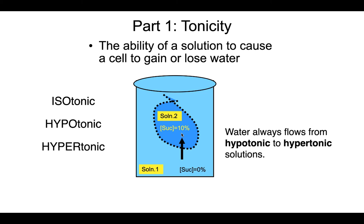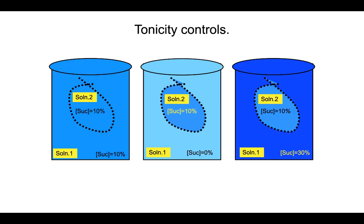This is what you are going to be working with this week in lab. You'll be setting up three controls that, based on what you know about tonicity, should behave in a very predictable way. You will set up three dialysis tubing bags, each filled with 10% sucrose. You will then tie them off, weigh them, and incubate them in three different solutions: a 10% sucrose solution, a 0% sucrose solution, and a 30% sucrose solution. They will be incubated for several hours, during which there will be a flow of water either into or out of the bag, or maybe no change at all.